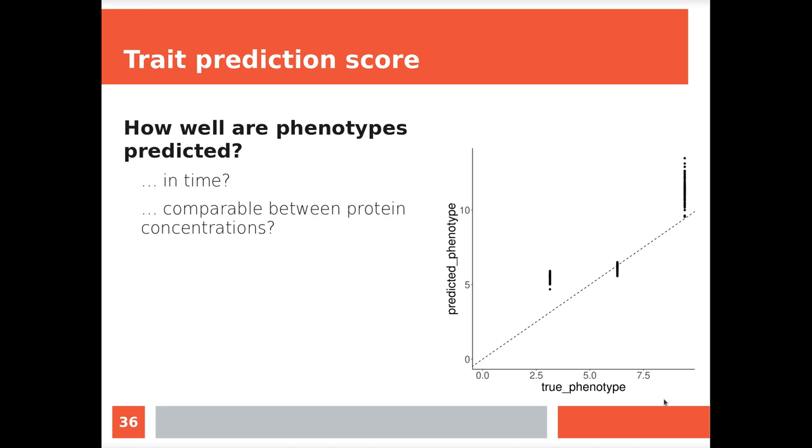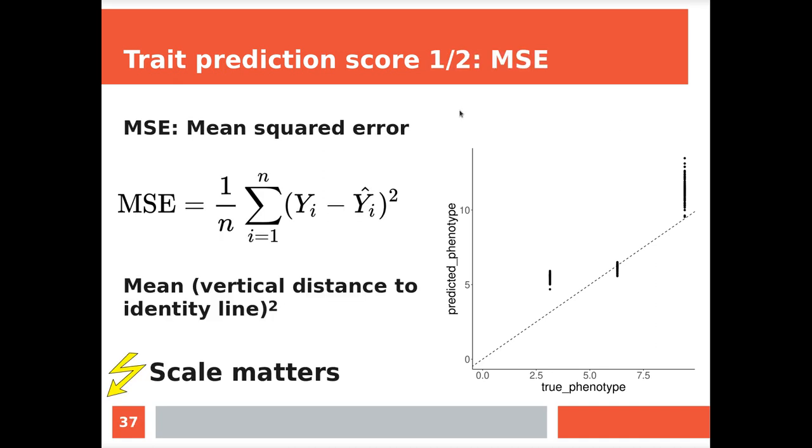So let's zoom in on the trait prediction scores, because we need to quantify this. How well does the prediction go then? How well does it go in time? And I want it in a way that I can compare protein or protein concentration. So I can look for proteins that are better predictable. But if their range from concentration differs between two proteins, then I want a way that the range of protein concentration doesn't matter. So this is the context - we have a true phenotype now. We have a predicted phenotype. Ideally it's on this line, so if all the points are on that line, the trait prediction score should be either very high or very low.